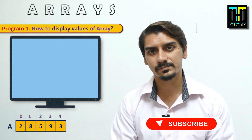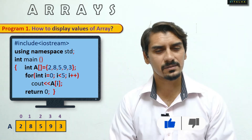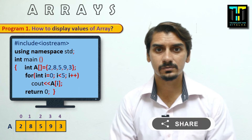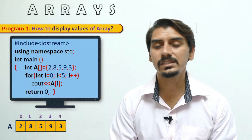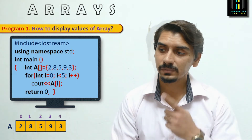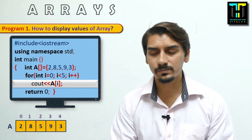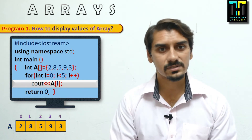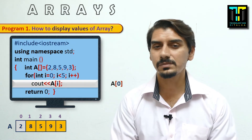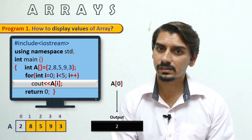Now let's consider different code examples with arrays. The first example is displaying the array. In this example, the code uses a for loop where the value of i starts from 0 and goes to 4, covering the indexes of array 'a'. Within the body of the for loop we display cout << a[i]. Initially when i equals 0, we display a[0] which is the value 2, so 2 will be displayed.